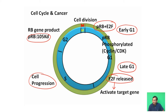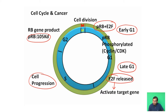If there is any deletion mutation or any mutation in the RB gene, the rhythmic progression of the cell cycle is disrupted, resulting in unregulated proliferation of cells and tumor development. So RB gene, which is responsible for controlling the cell cycle, if mutated leads to cancer. In its normal condition, the RB gene acts as a tumor suppressor gene.